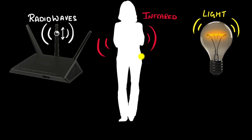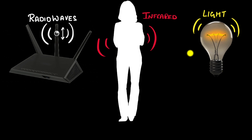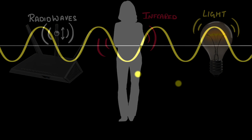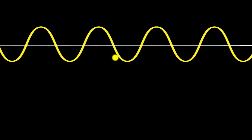But now comes the big question: why do we get radio waves in one case, infrared rays in another, and light rays in yet another? In all cases it's charges going up and down — so why do we get different kinds of electromagnetic waves? To answer that, we need to understand some key properties of these electromagnetic waves.